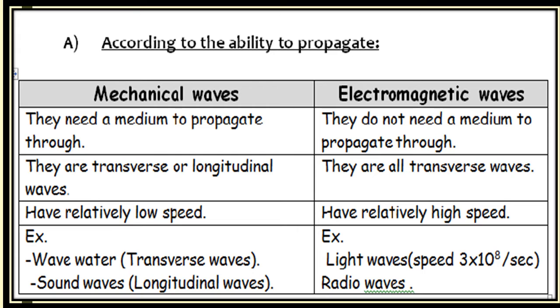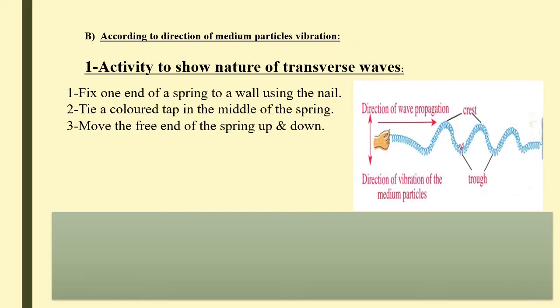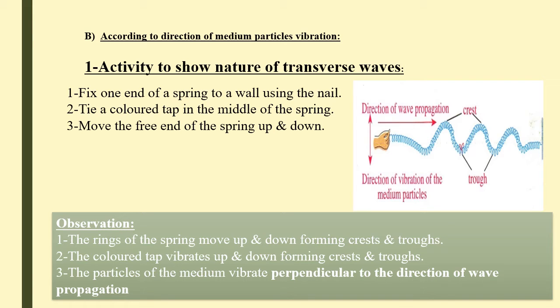To show transverse waves: fix one spring to the wall and tie colored tape in the middle of the spring. Move the free end of the spring up and down. We can observe the rings of the spring move up and down, forming crests and troughs. The colored tape vibrates up and down forming crests and troughs, and the particles of the medium vibrate perpendicular to the direction of wave propagation.